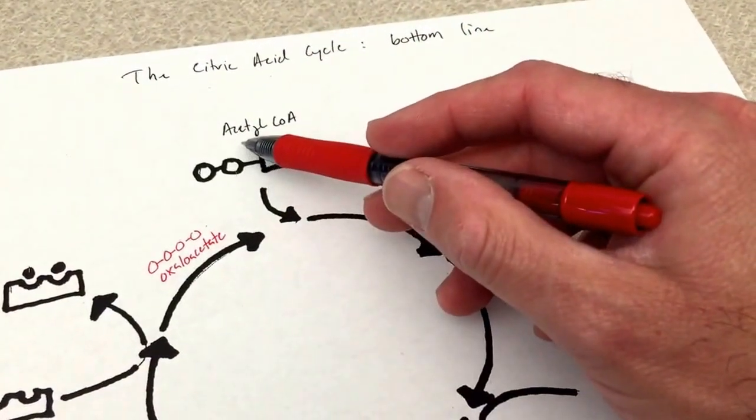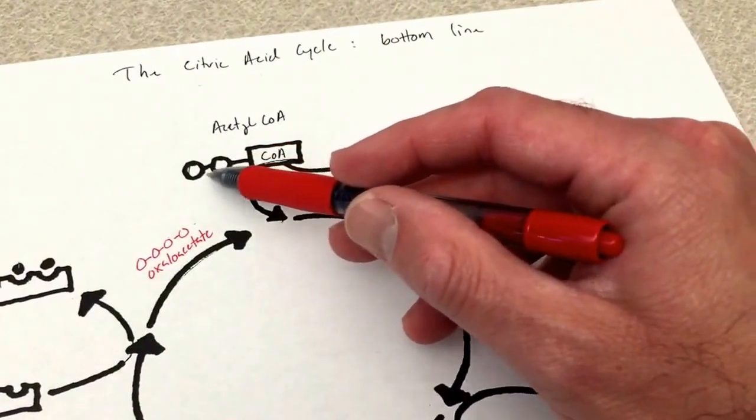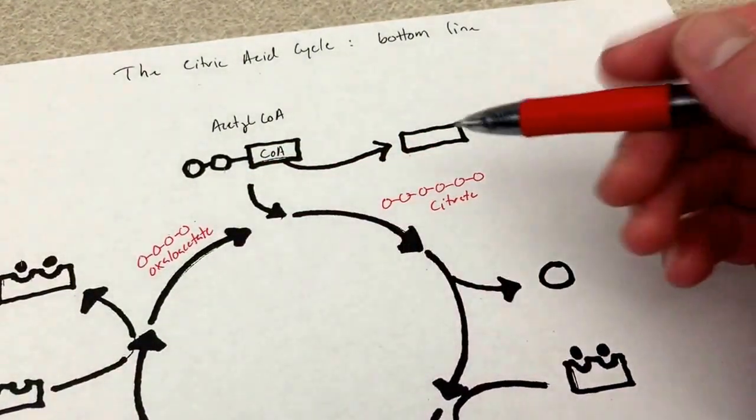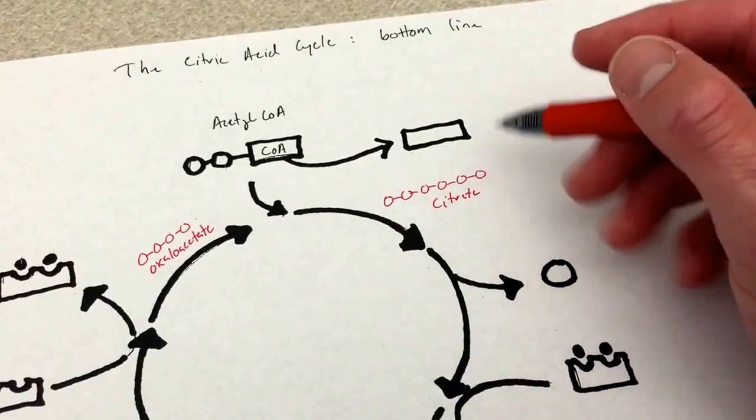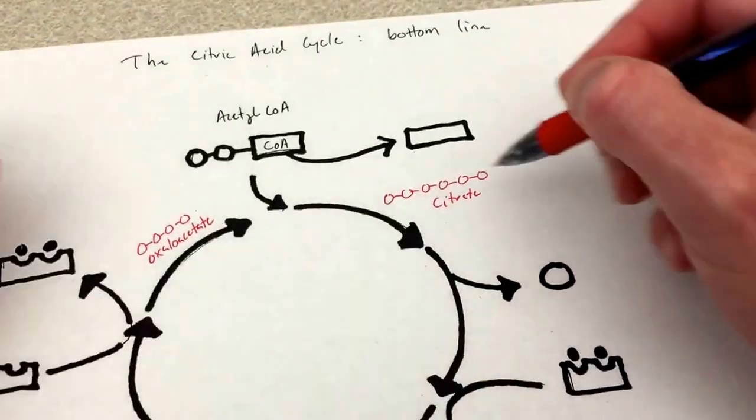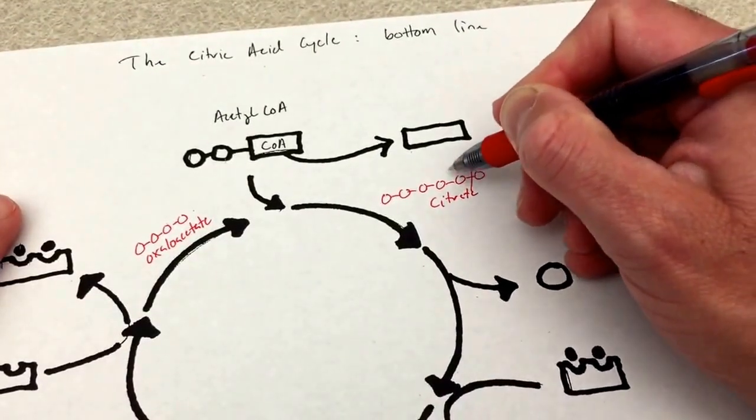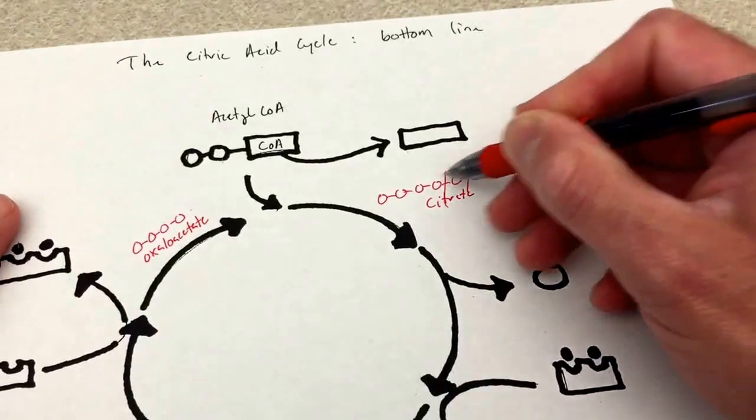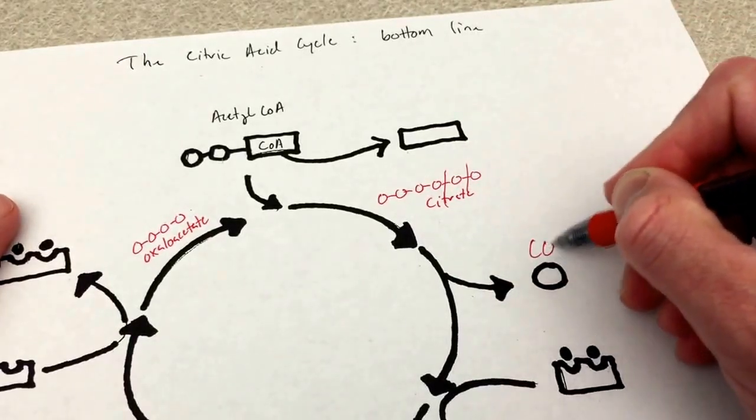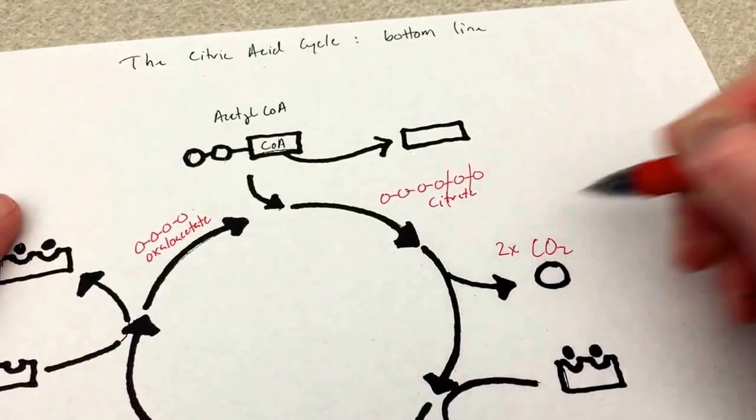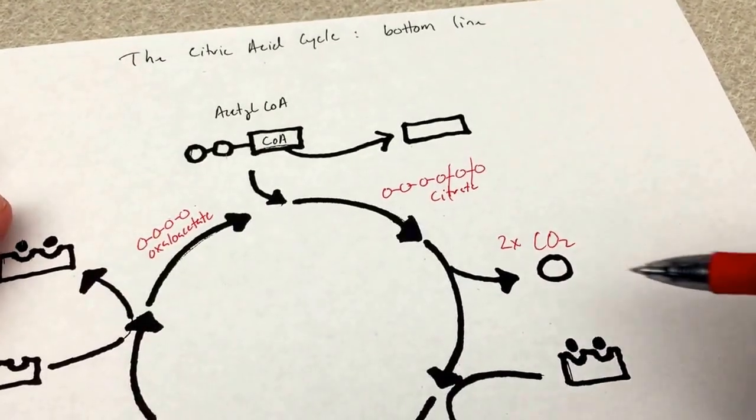Now acetyl CoA is bringing in with it its electrons in these bonds, so what's going to happen is that we are going to continue to lop off CO2. We're going to remove two CO2 molecules.